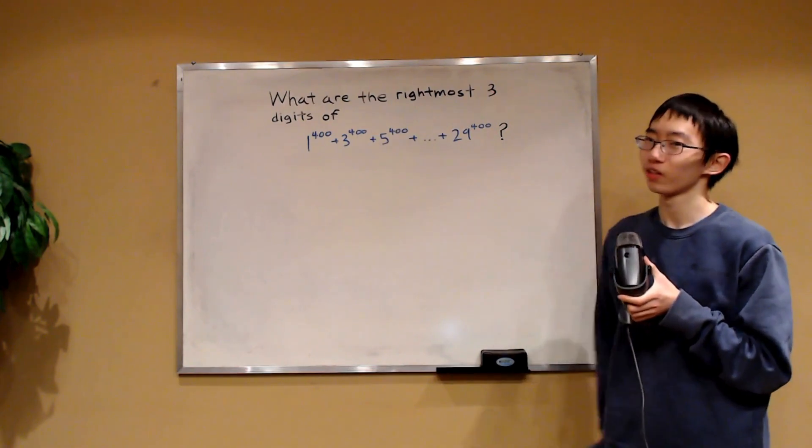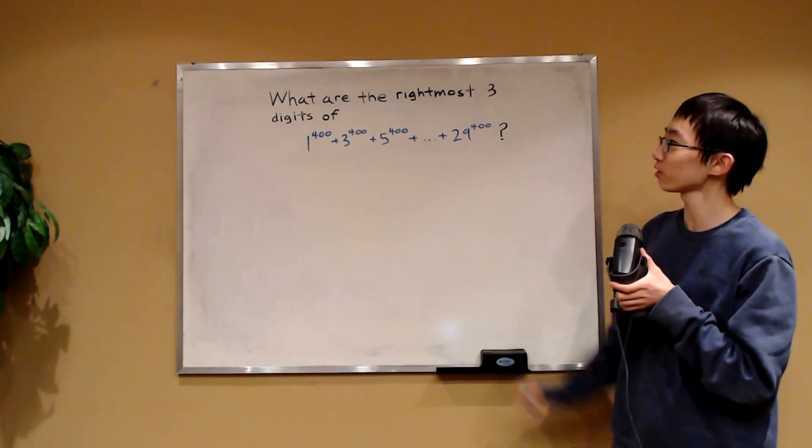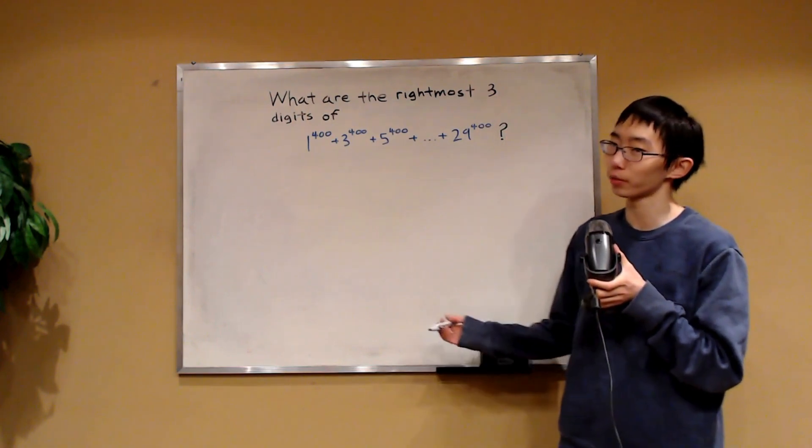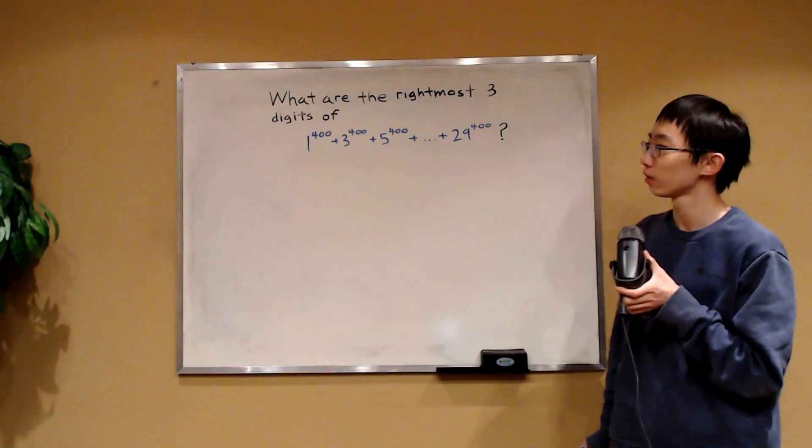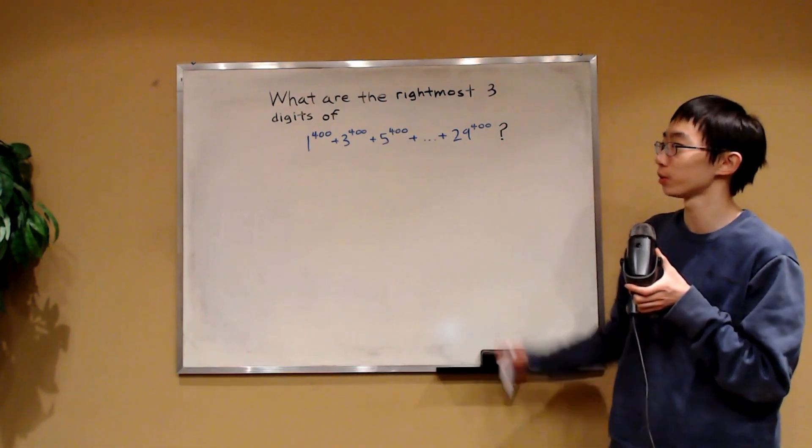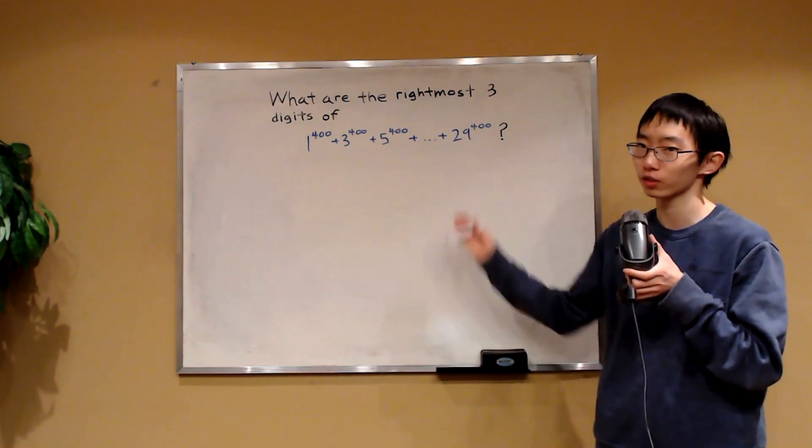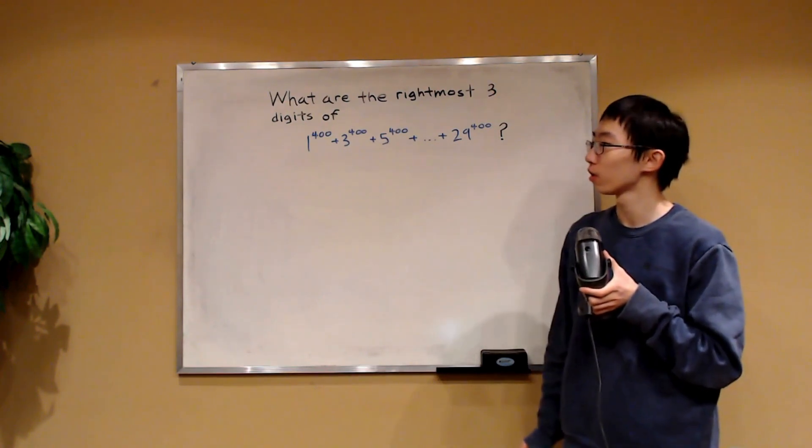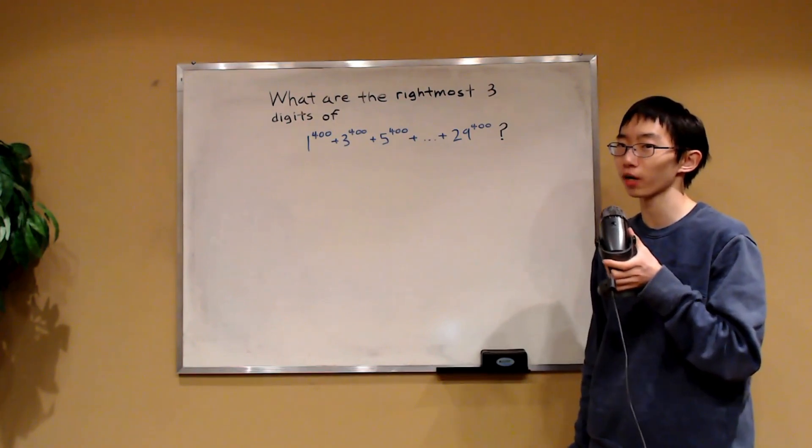Firstly, we should also take note that finding the rightmost three digits of some number is just the same as finding the remainder when this is divided by 1,000, right? Or computing this number mod 1,000. So maybe we can consider modular arithmetics in mod 1,000.